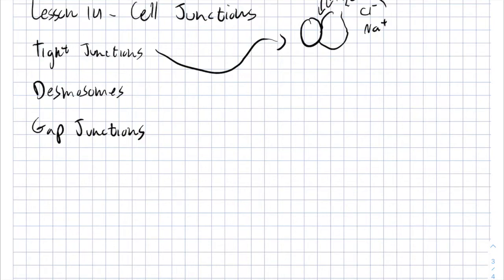We need this type of junction in places where you can't allow things to go through, like the bladder, the urinary bladder, the kidney, or some places in the intestine. You can't allow water and molecules to go through to the other side from the cells, from the tissue.